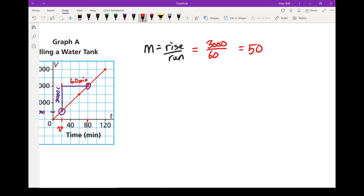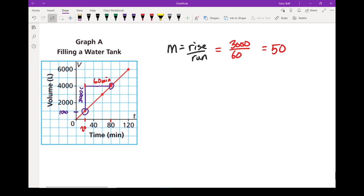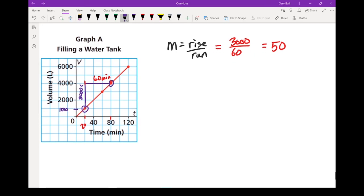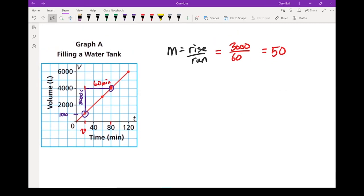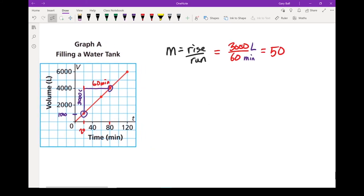Now if I just look at a number, that number doesn't mean a whole lot to us. And one of the questions says, what does that number mean? When you start putting units in there, that number now starts to mean something. So if I put my units in 3,000, that was liters because the tank went up by 3,000 liters and it took it 60 minutes to get there. So when we put those units, transfer them over to our final answer, we've got liters per minute. So what that's saying is that tank is filling at 50 liters per minute.